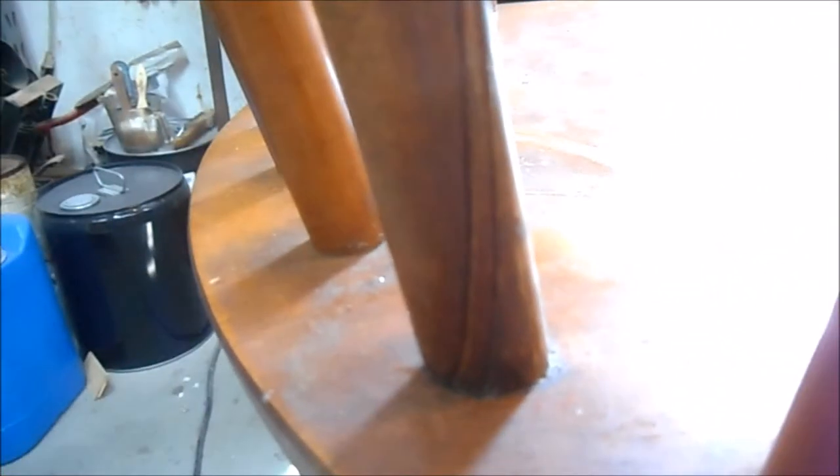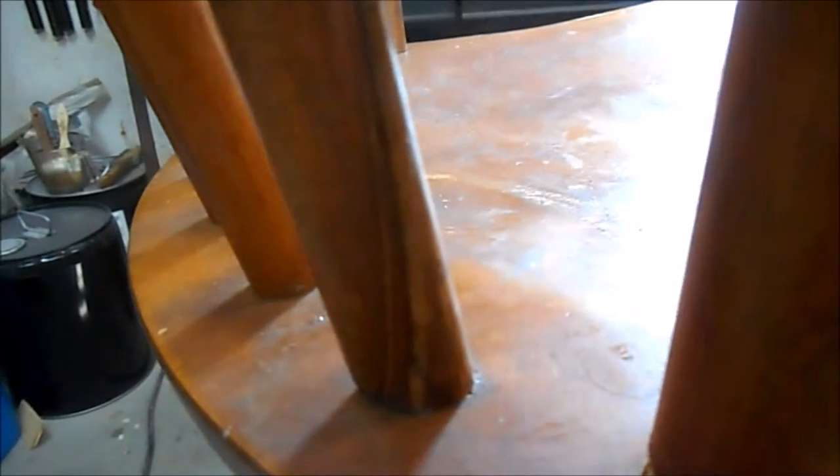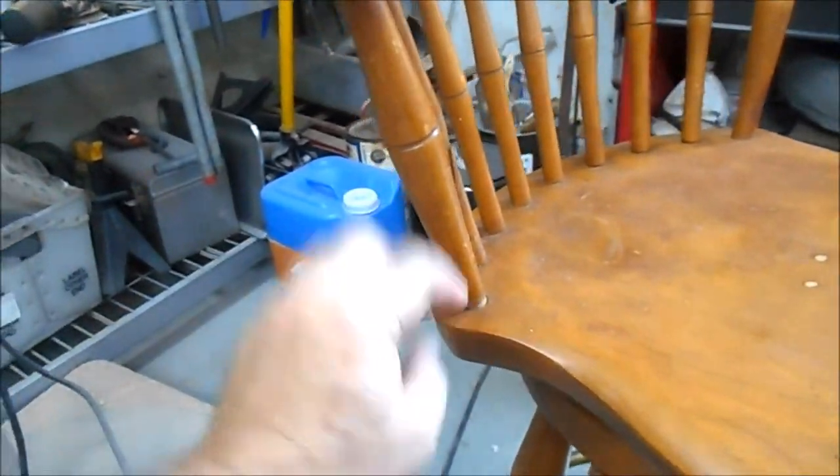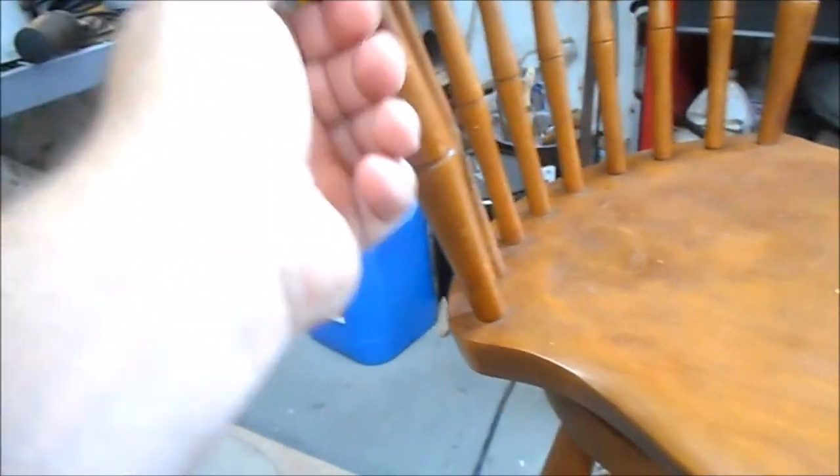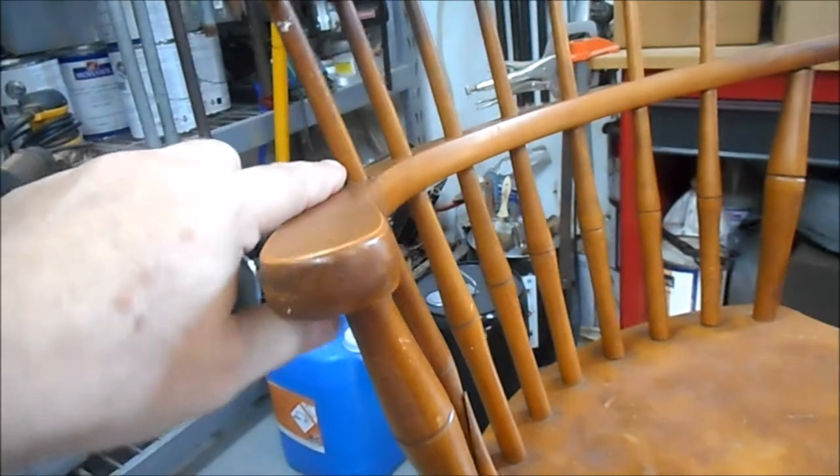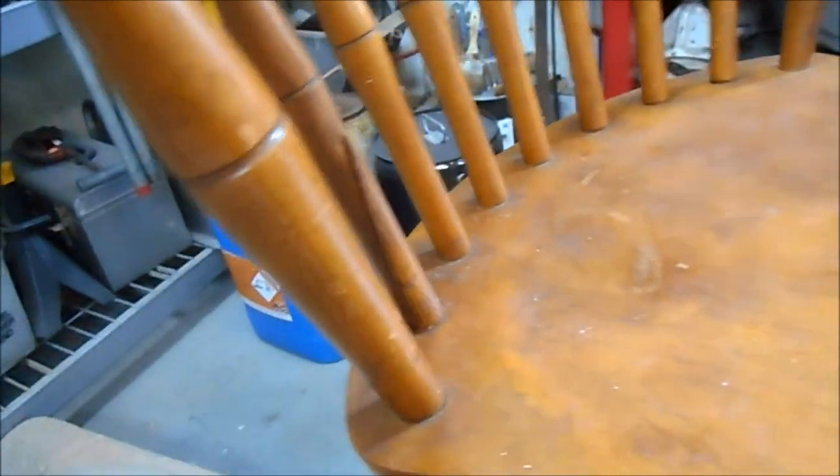The glue joint that holds this spindle for the armrest failed. Someone probably picked this up, it came up, pushed this way and caused this split here. So what I need to do is get this back all the way down and then using a couple of clamps line this back up and pull these joints tight.